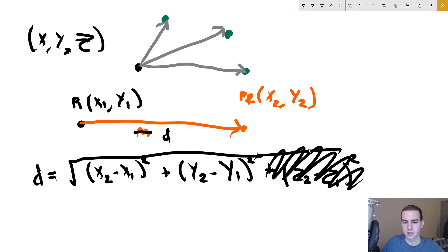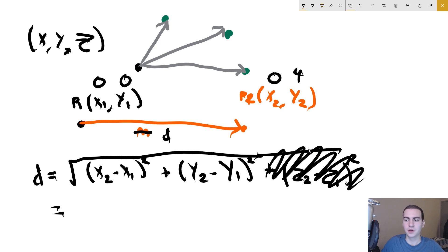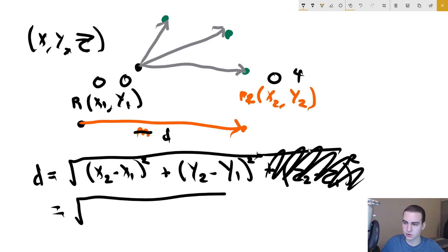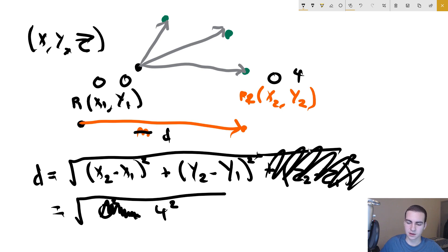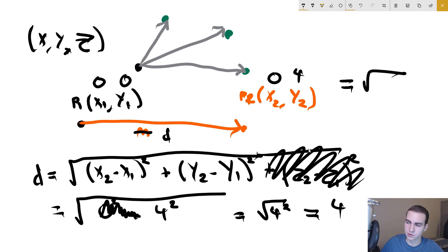To prove this with standard numbers: if P1 is at (0, 0) and P2 is at (0, 4), the distance should be 4 since we're just four units apart on the y-axis. Plugging in: sqrt((0-0)² + (4-0)²) = sqrt(16) = 4. That gives us the correct distance for our line.